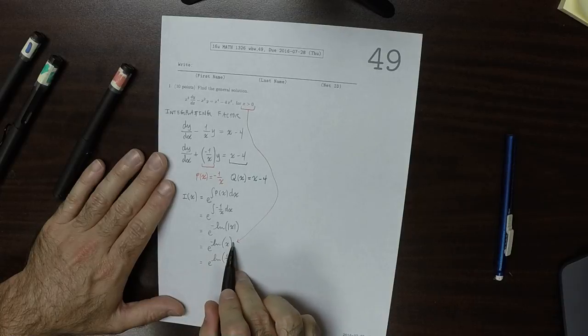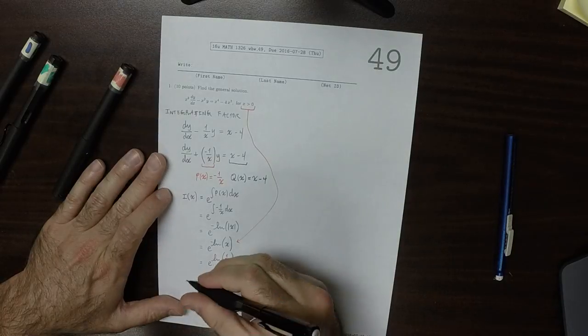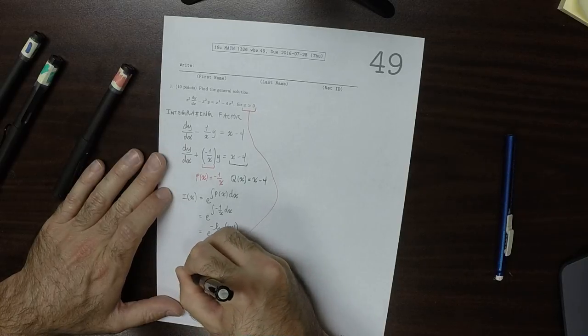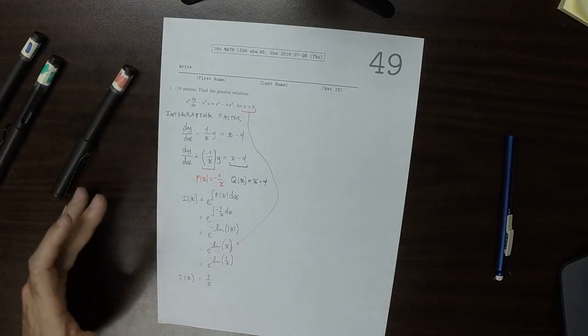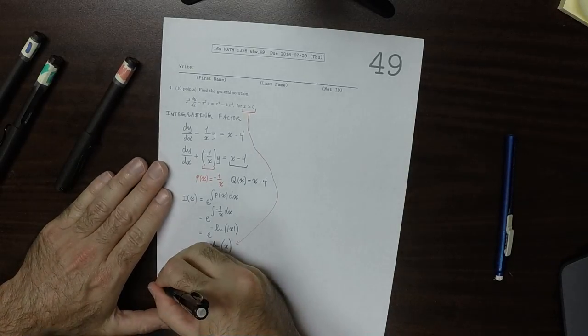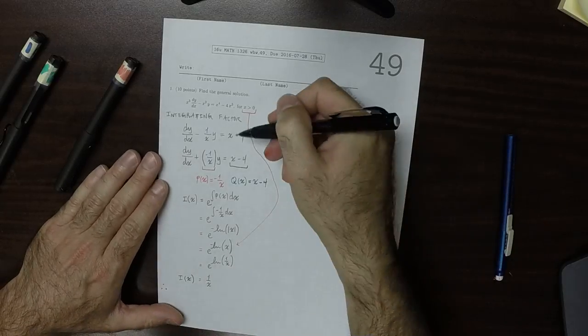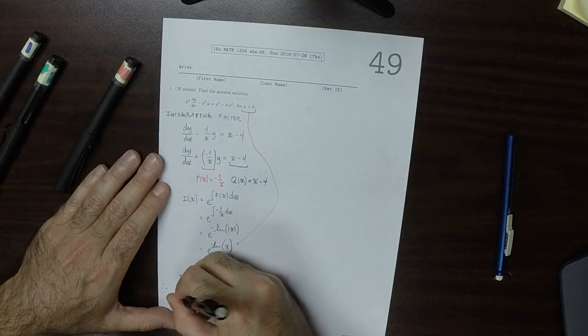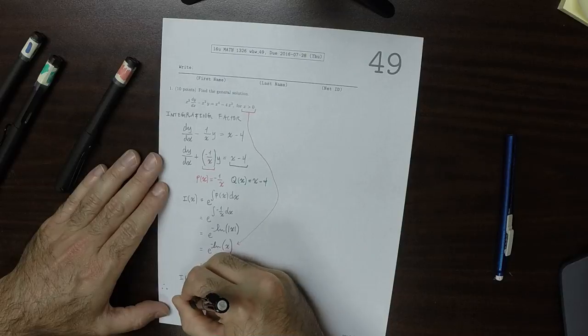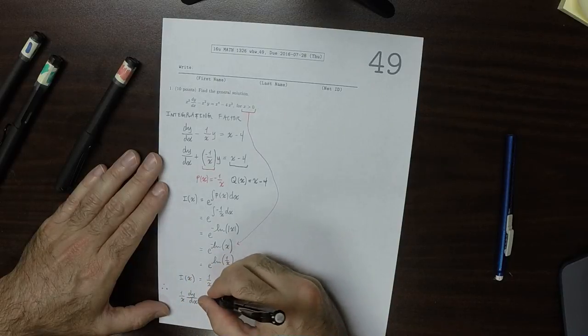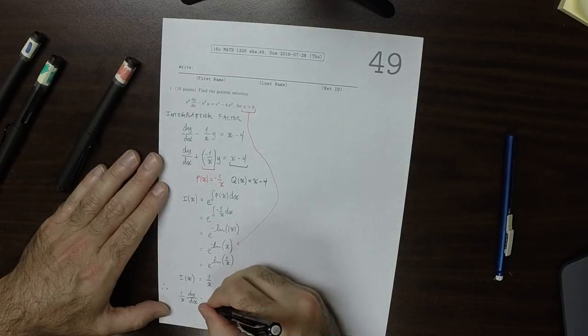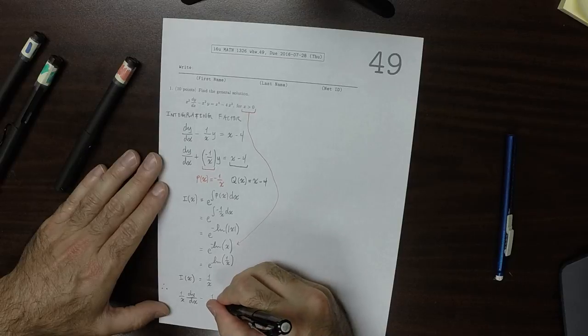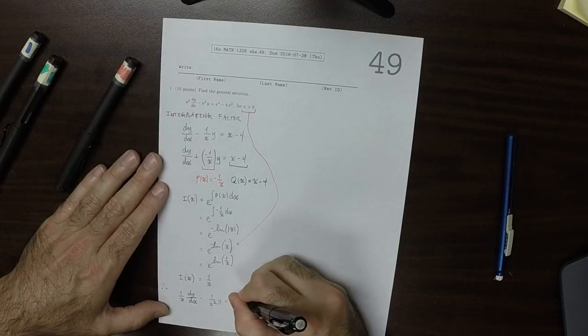So I brought the negative inside as a negative 1 exponent and wrote it as 1 over x, so that's just 1 over x. And that's the integrating factor. So we'll multiply this differential equation by 1 over x. So that's 1 over x dy dx minus 1 over x squared y is 1 minus 4 over x.